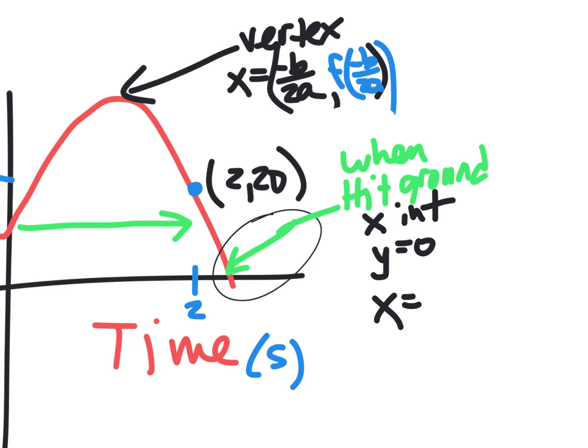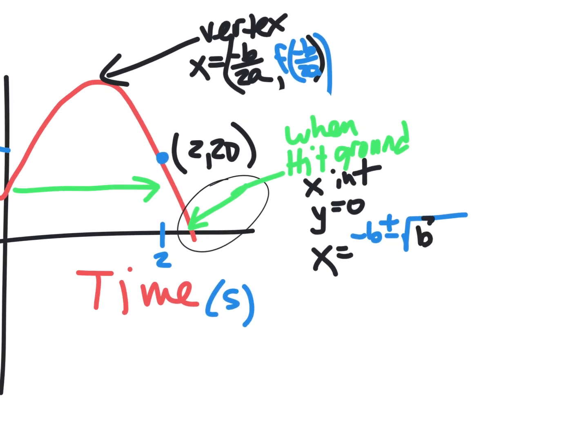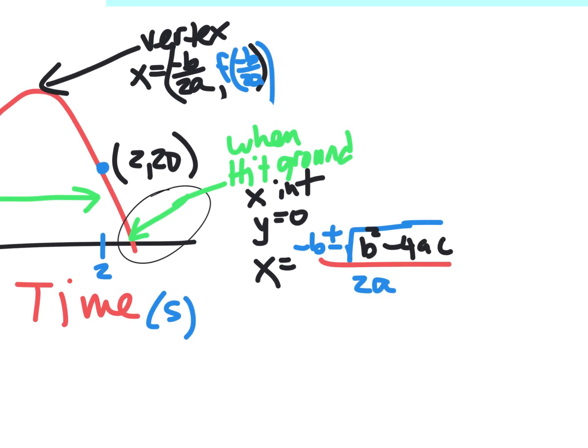The quadratic formula is x = (-b ± √(b²-4ac)) / 2a — you have to know it, it won't be given to you. That part under the square root, b²-4ac, is called the discriminant. If it comes out negative you'd be square-rooting a negative and it won't be real. In the real world that won't happen because the ball does hit the ground, so your discriminant won't be negative — but it might give a weird decimal, which is why you need a calculator.